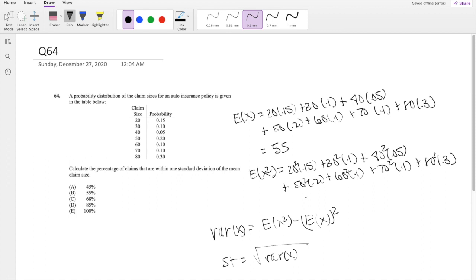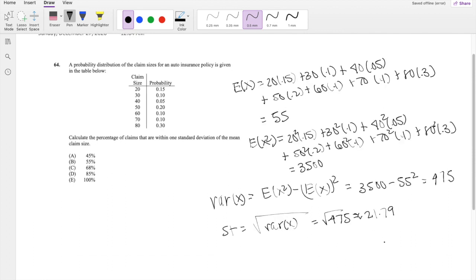So what is the second moment? The second moment was equal to 3,500. So when we plug that into our variance formula, 3,500 minus 55 squared, you get 475. And the square root of 475, that's equal to approximately 21.79. So when we subtract that from the mean, if mean is 55, one standard deviation away will be 55 minus 21.79, which is the lower limit, 33.21.